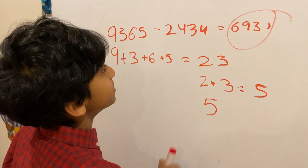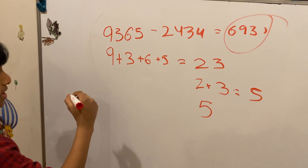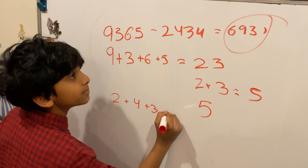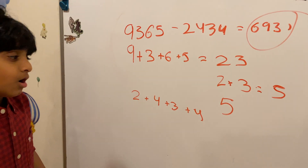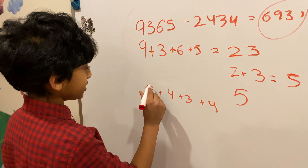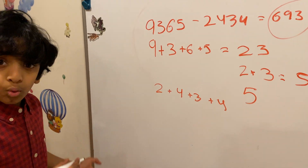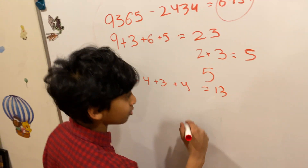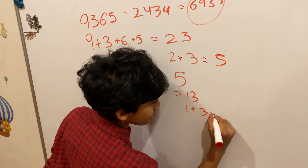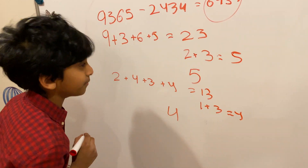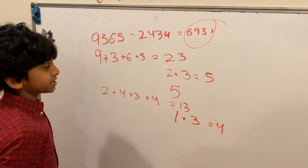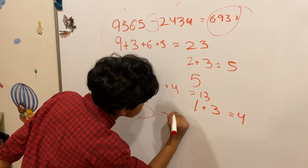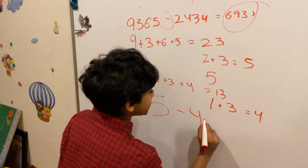Now the second part of the left hand side: 2434. We do 2 plus 4 plus 3 plus 4, which is 13. Let's make 13 into a single digit number: 1 plus 3 which equals 4. So we got 5 for the first part and 4 for the second part. The operation is subtraction, so we do 5 minus 4 which equals 1. Let's keep 1 aside.